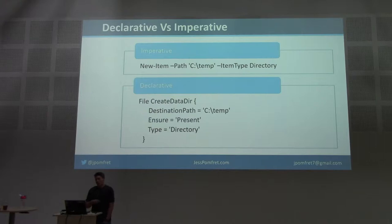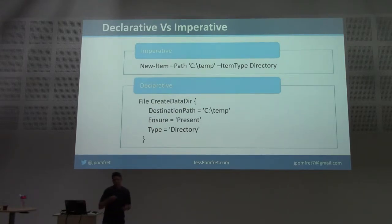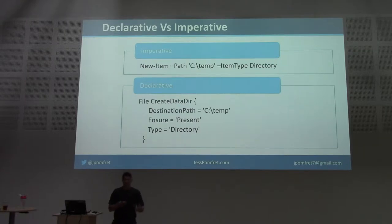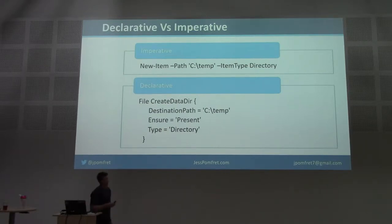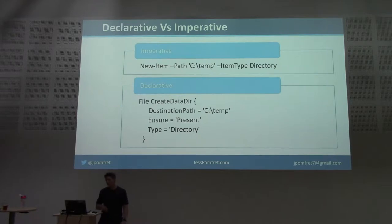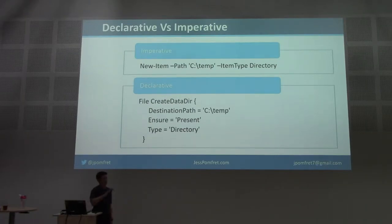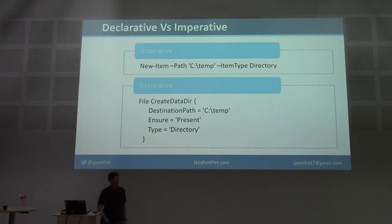Step one: we author our configuration. The first thing to understand is that DSC is a declarative language. Usually when we write PowerShell it's imperative — I say exactly how to do the job: 'I want a new item, at this path, as a directory.' With the declarative DSC resource block at the bottom, I'm just telling you what I would like. I don't care how you do it, I just want a directory present at that location. With declarative language you get away from having to roll your own error handling and logging. If I run that imperative script twice I'll get a sea of red errors. With DSC, I run it once and it creates the directory; when I run it again it says 'we're in the desired state, no changes needed.'